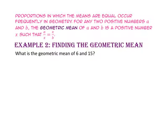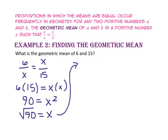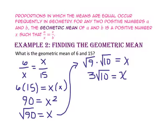For example 2, we will find the geometric mean of 6 and 15. The two numbers 6 and 15 are our extremes and X is the geometric mean appearing as both means. Using the cross product property, 6 times 15 equals X squared, so 90 equals X squared. Taking the square root of both sides, X equals the square root of 90, which simplifies to 3 times the square root of 10, or approximately 9.5.